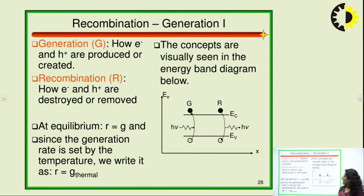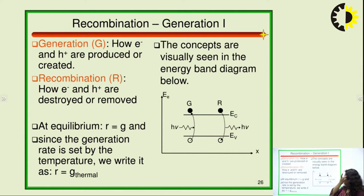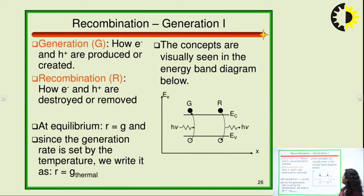At equilibrium, the rate of recombination is equivalent to the rate of generation, which is shown as R equals G. Since the generation rate is set by temperature, we can write R is equivalent to G thermal.